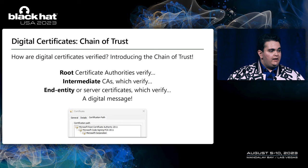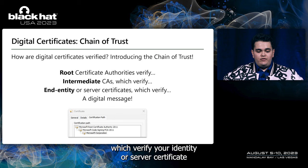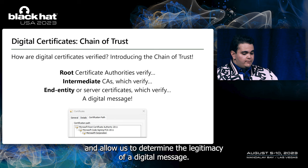So, how is a digital certificate verified? Through the chain of trust. Remember the trusted root CAs that come with your machine? We can verify if a digital certificate is legitimate by checking if it chains up to one of these trusted CAs. In practice, the root CAs verify intermediate CAs, which verify your end entity or server certificate and allow us to determine the legitimacy of a digital message.